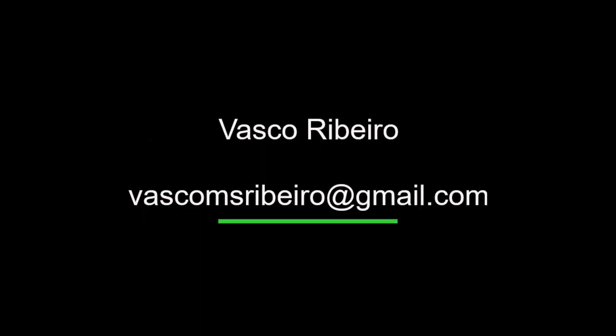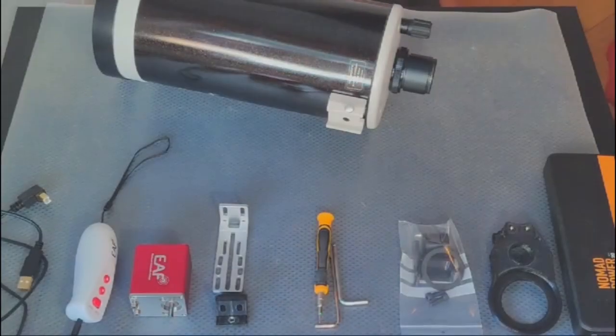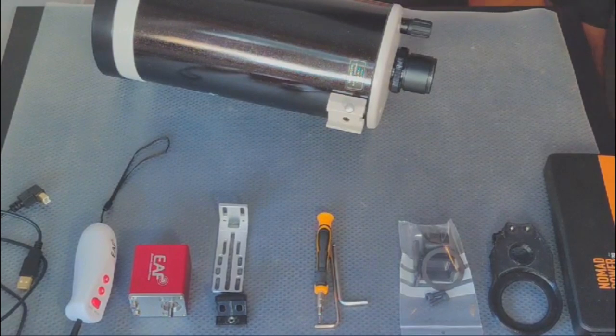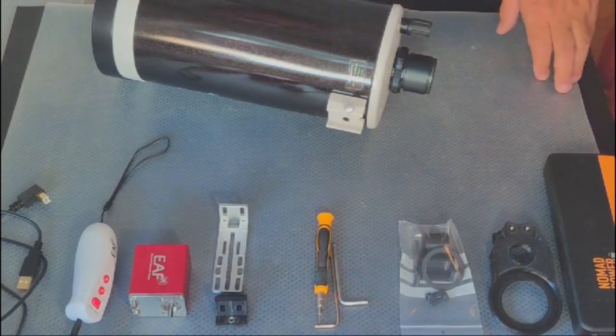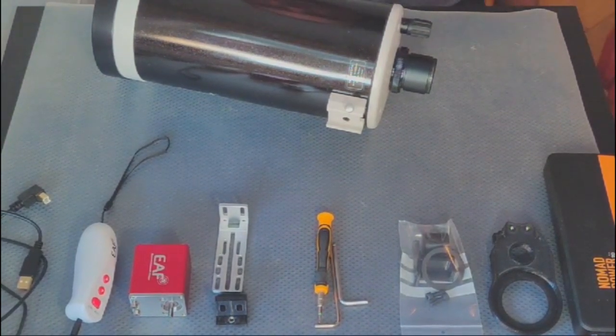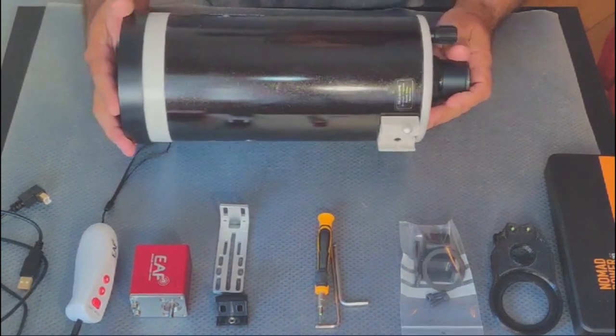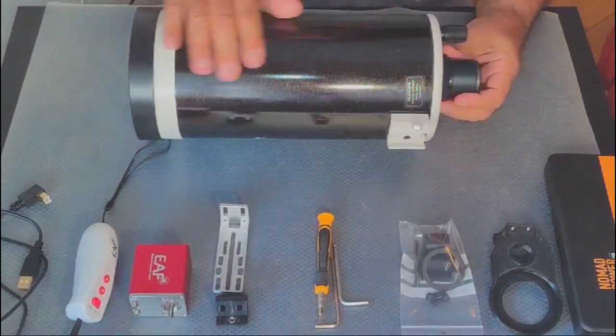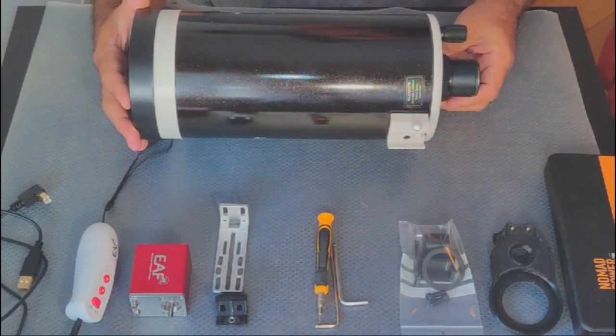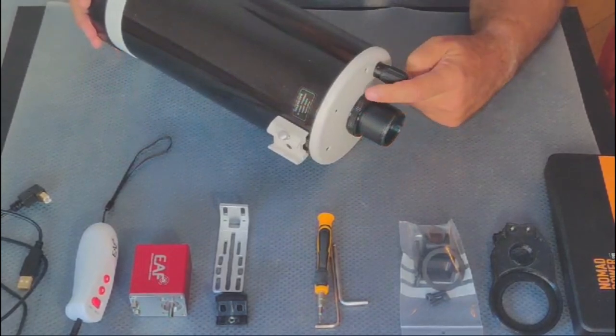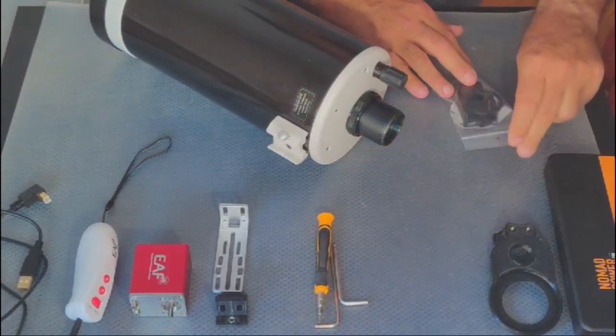Mac 127 How to Assemble a ZWO Electronic Automatic Focuser on a Mac 127. As in my previous videos, I will show you how to assemble a ZWO Electronic Automatic Focuser in a Mac 127 in the direct drive mode. This mode has many advantages over a belt-side mounted ZWO Electronic Automatic Focuser.